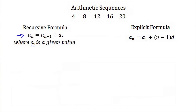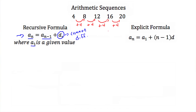Now, a_n is just any given term in our sequence, and a_(n-1) would be the term previous to that. So if a_n was the third term in our sequence, then a_(n-1) would be the second term. Now d is called the common difference — it's the number that we add each time to get the next value in our sequence. So going from 4 to 8 we add 4, from 8 to 12 we add 4, from 12 to 16 we add 4, and from 16 to 20 we add 4. That means our common difference is 4.